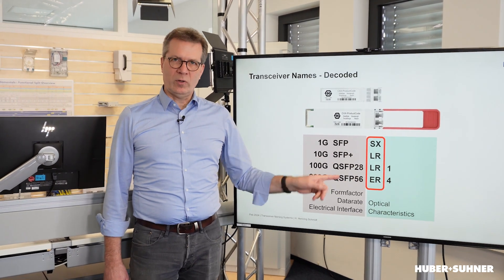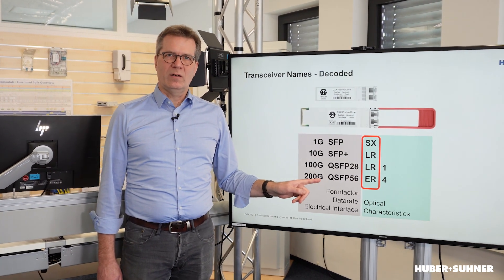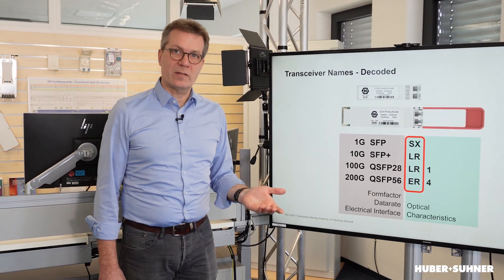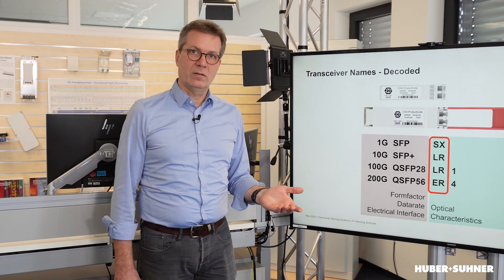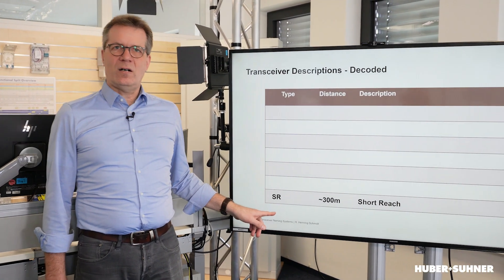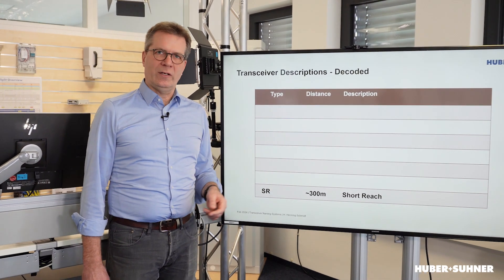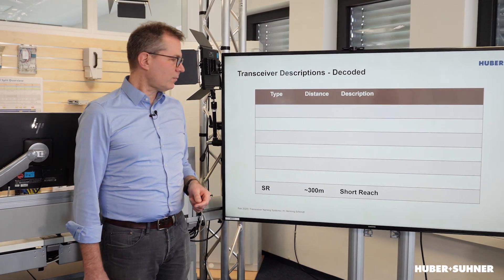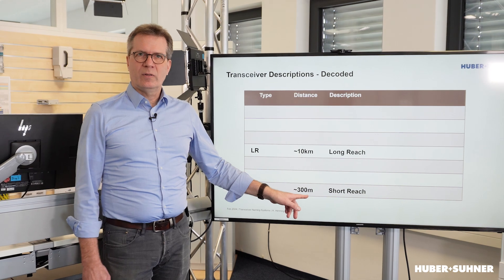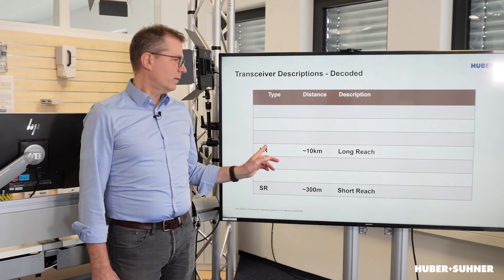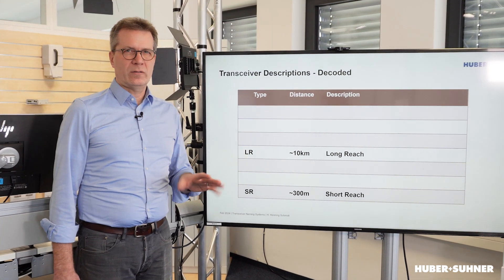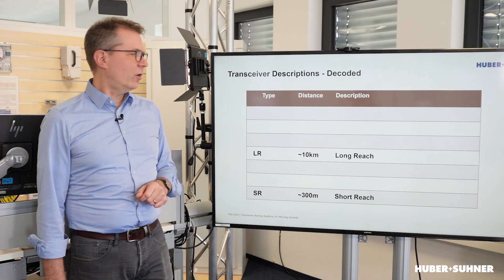Those letters describe an important piece of the optical transmission system, and that is the achievable distance. Here is a little overview. SR can be read as short reach, a reach of roughly 300m. LR can be read as long reach, and it will go up to roughly 10km.